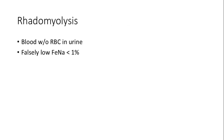Rhabdomyolysis can significantly alter urine composition. It presents with blood in the urine without red blood cells and can falsely lower the fractional excretion of sodium to less than 1%. Understanding these changes is crucial for accurate diagnosis and treatment.